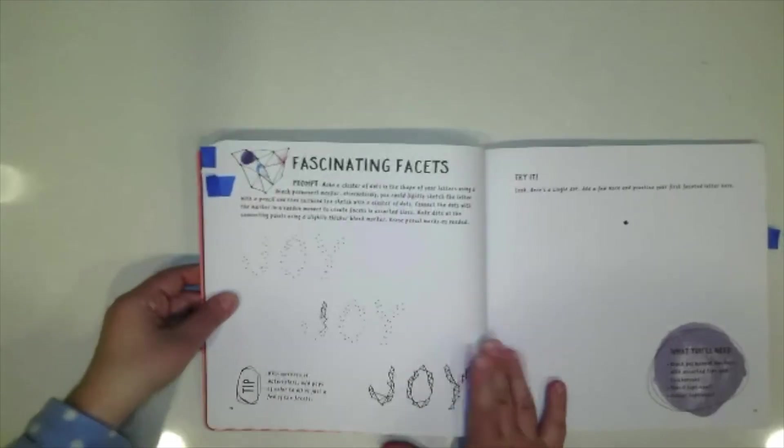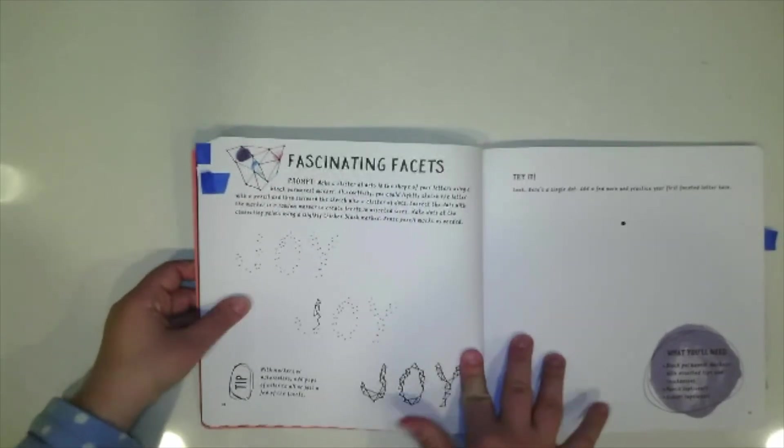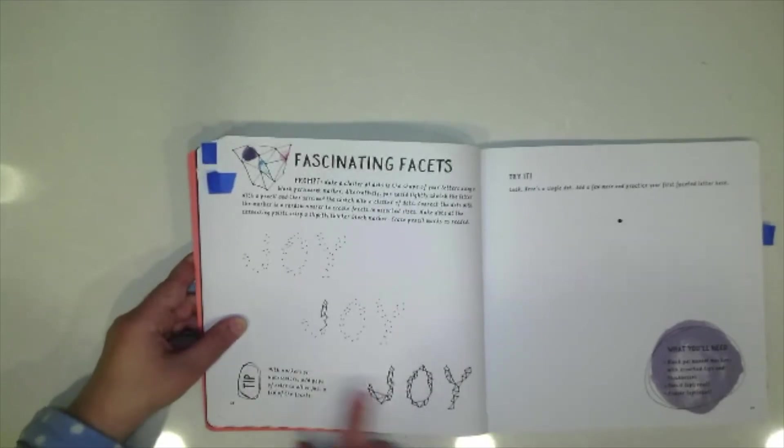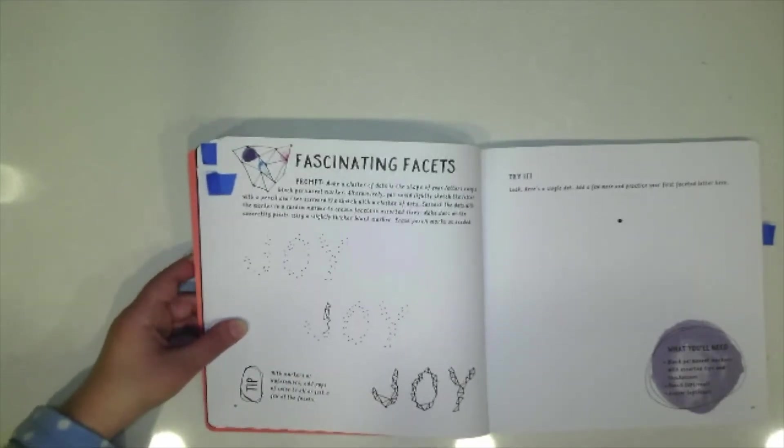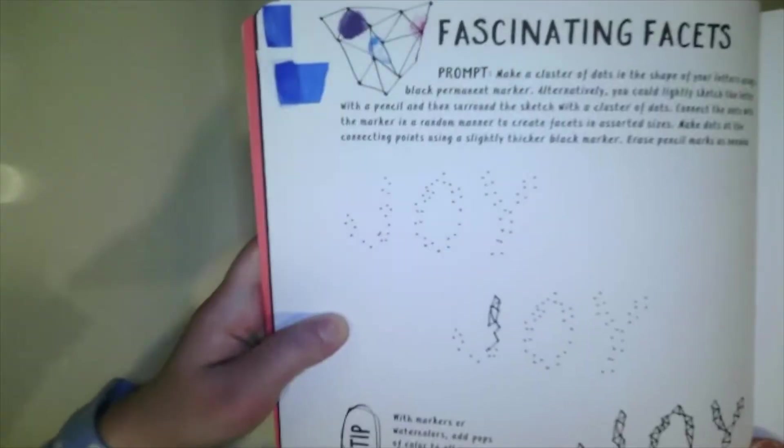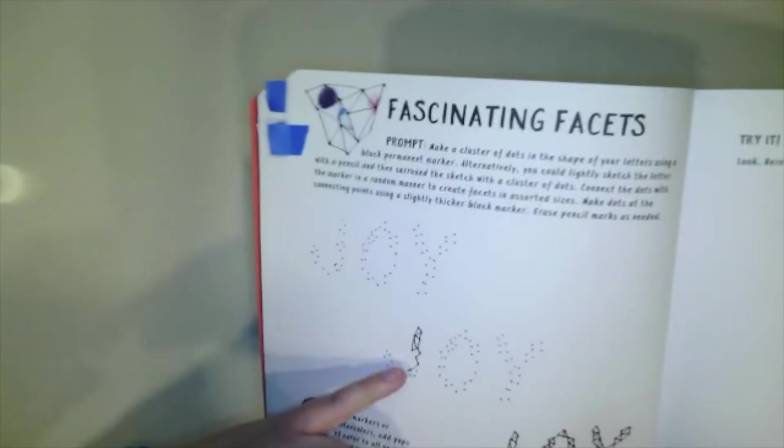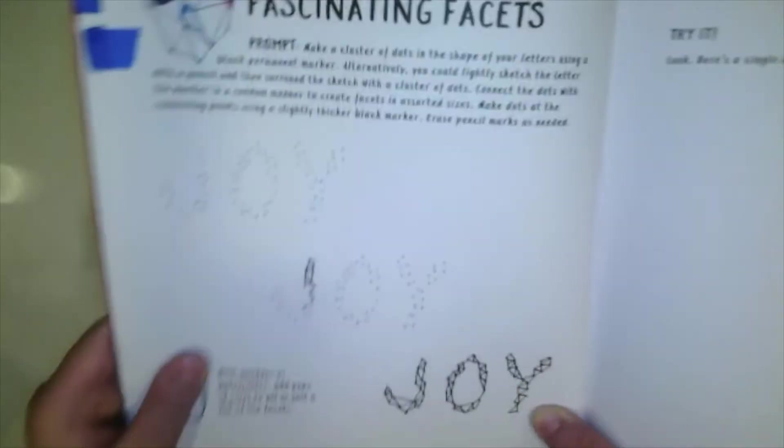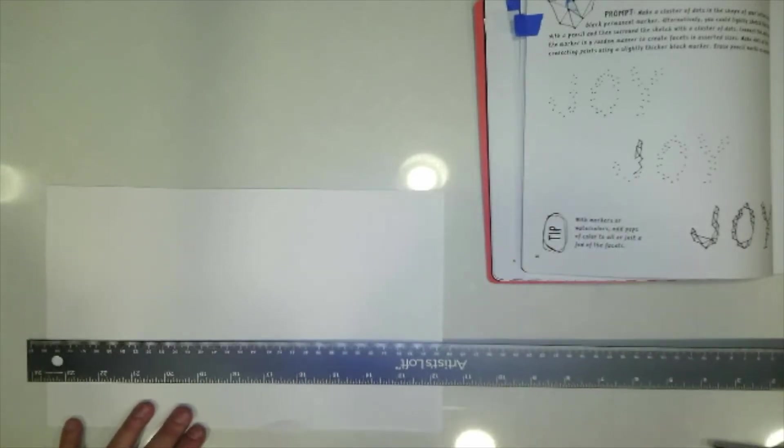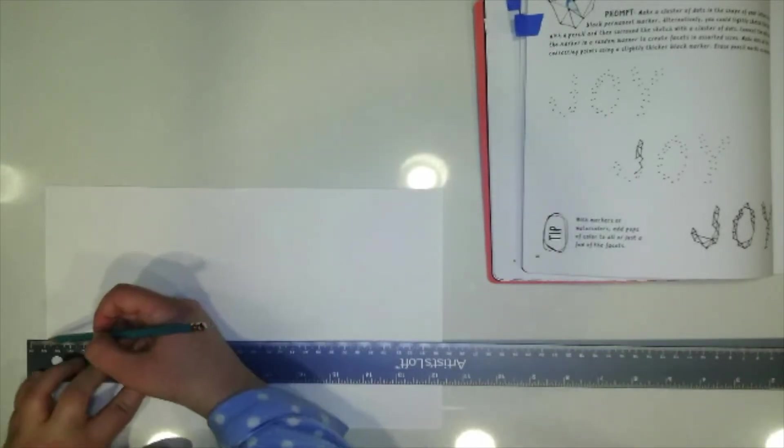Going back to the book we are going to take a look at our next type of calligraphy. We are going to do connect the dots. So if we take a look at the page here you can see the first word is filled with just dots and then we will start connecting those dots with little lines. Using my ruler I'm going to make a straight line again towards the bottom.